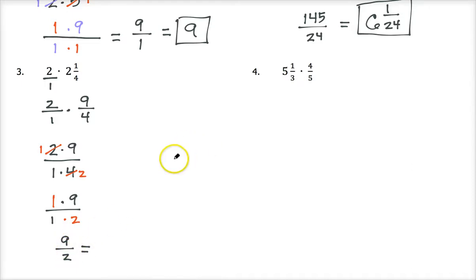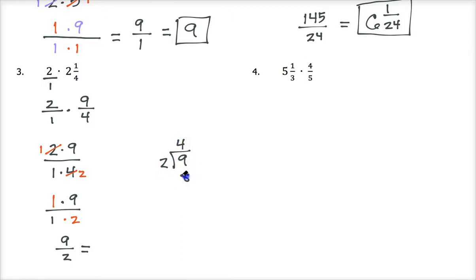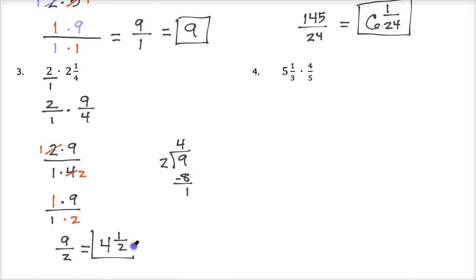One times nine is nine and one times two is two, so I get the improper fraction nine halves. I want to make this a mixed number: nine divided by two goes four whole times with a remainder of one, so this becomes the mixed number four and one half.